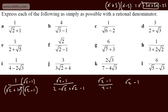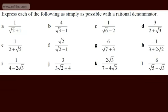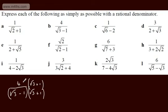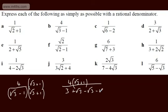So we end up with root 2 minus 1 over 1, which is just root 2 minus 1. As you see, we end up with this number squared minus this number squared. For 4 over root 3 minus 1, multiply by conjugate root 3 plus 1. On top: 4 times (root 3 plus 1). On the bottom: root 3 times root 3 is 3, then plus root 3 minus root 3 minus 1 — those middle terms cancel, giving 3 minus 1 equals 2. We didn't expand the top because I can see I can cancel: 4 over 2 gives 2, so the final answer is 2(root 3 plus 1), or 2 root 3 plus 2.